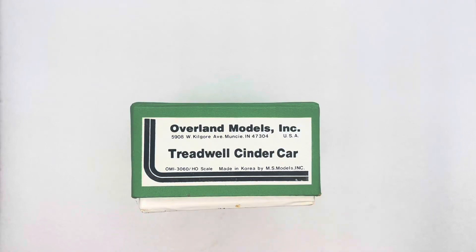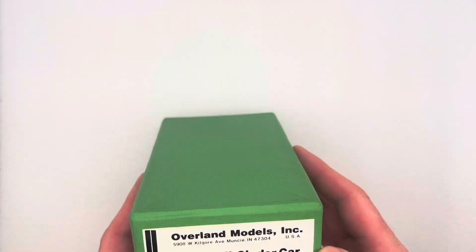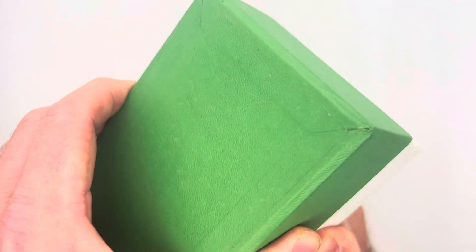All righty, found a box of brass stuff. This is an Oberlin models Treadwell cinder car. And let's see what we got here. I don't think the box is taped—no it's not. It's a really good box.